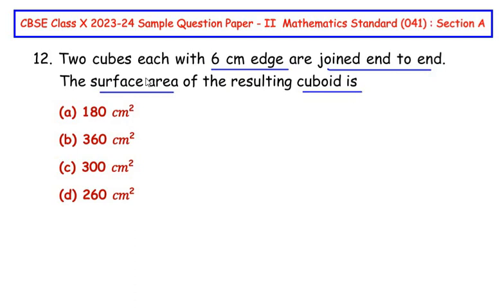In this question there are two cubes, and a cube is a shape in which all the dimensions are of equal size, joined end to end to form a cuboid. Let me explain this using a diagram.